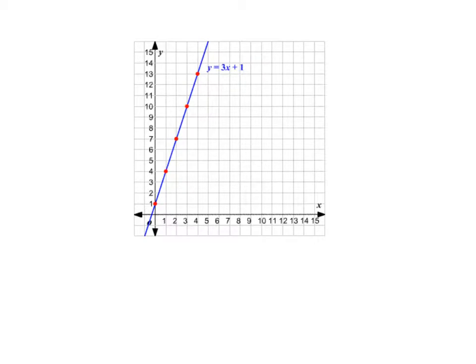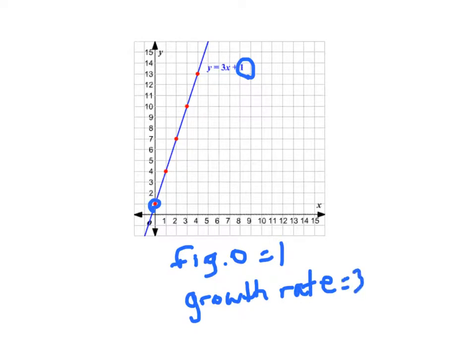That's right. Figure 0 would have one tile. It's right here. And right there on the graph. And then the growth rate is going to equal 3. Growth rate equals 3. And you can see that the number of tiles would increase by 3 as we go up by 1. And the growth rate is shown in our rule. Right there. Number 3.